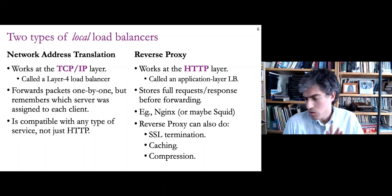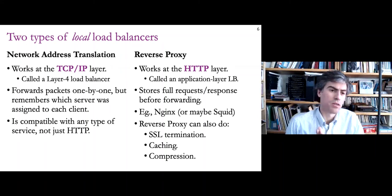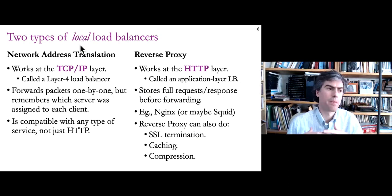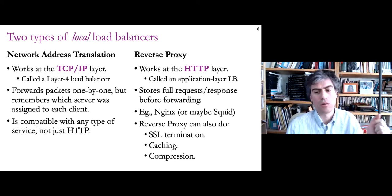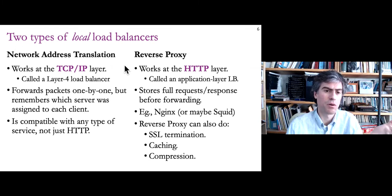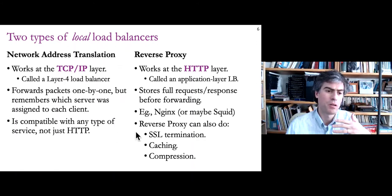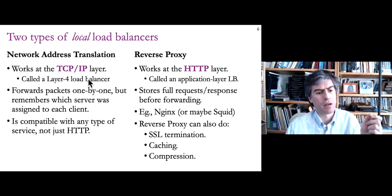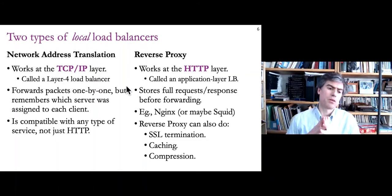The kinds of load balancers discussed so far are local load balancers — a single point of contact that defers work to other machines. There are actually two different ways of implementing this. The first is the network address translation load balancer, or NAT load balancer, which works at the TCP/IP layer — also called the layer 4 load balancer. Each network packet that arrives is handed off to one of the workers, and port numbers are used to associate all packets from a single TCP stream to the same worker.